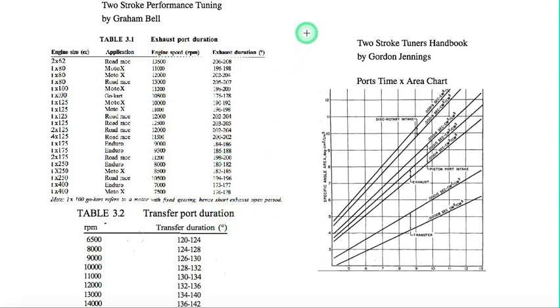And the book by Gordon Jennings, the Two-Stroke Tuner's Handbook, he gave a range for the transfers and exhausts and the intake with calculations for the time the port is open and the area of the port. The way it was done is not 100% in harmony with reality, but it was a step in the right direction.